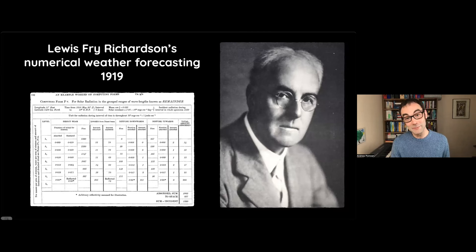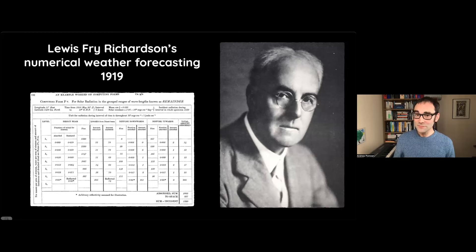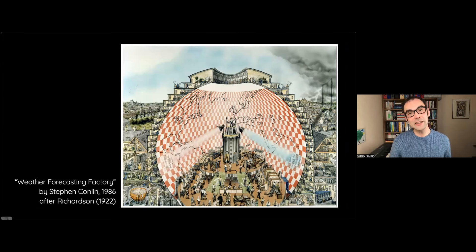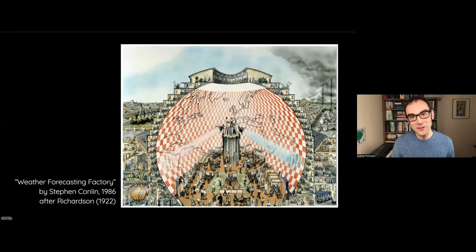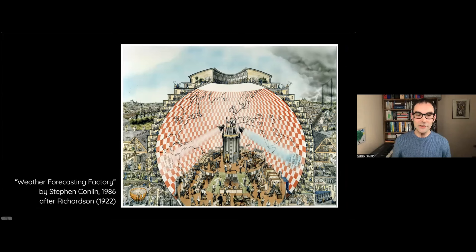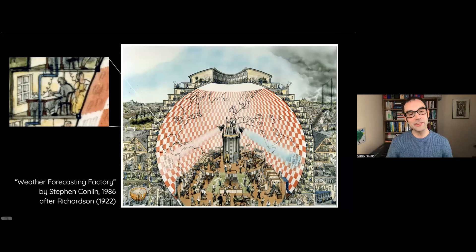He was doing it entirely by hand, and more than that, he was doing it on the front line of World War One. It wasn't a great success, but he was encouraged enough to write a whole book about it. He even envisaged how this would work practically: he had the idea that you could perform these simulations by getting enough people together in a purpose-built amphitheatre. This is an imagining of what that amphitheatre would look like — it was by an artist in 1986, but it was actually put forward in a book by Richardson in 1922. The idea was you would divide the surface of the earth into a bunch of grid squares, and you would have mathematicians behind each grid square, all coordinated by people in the center.